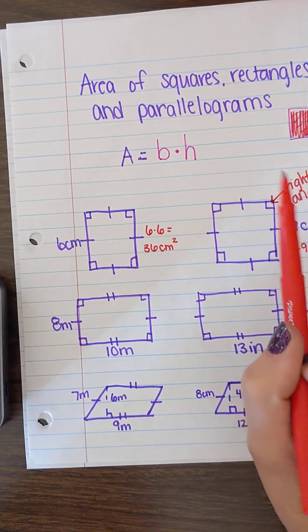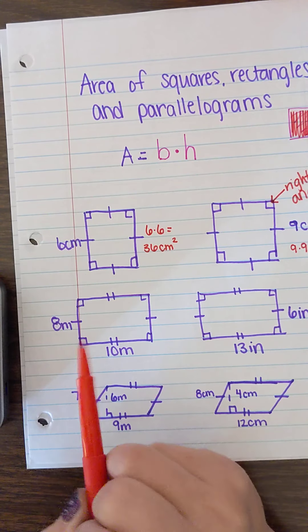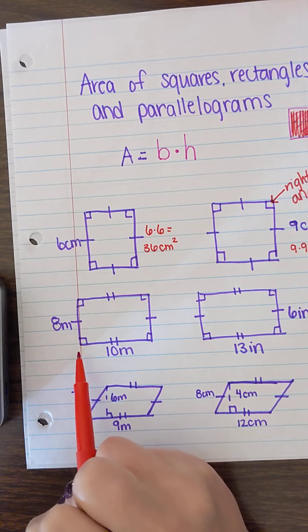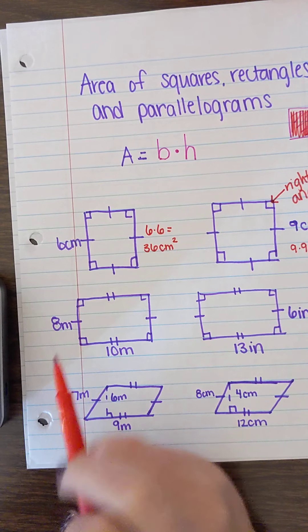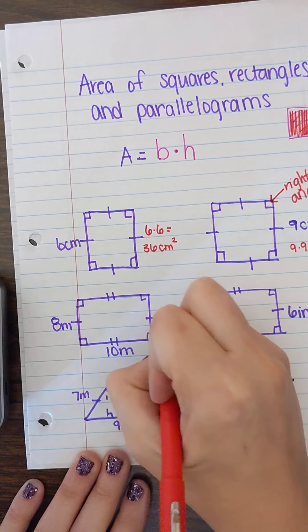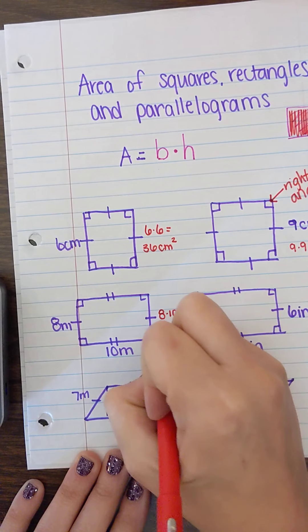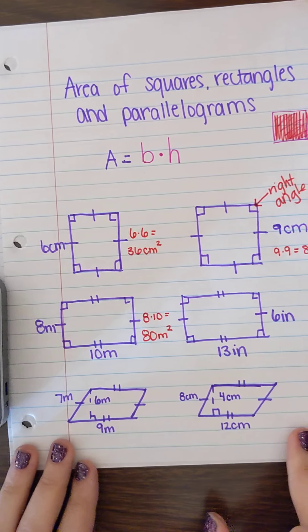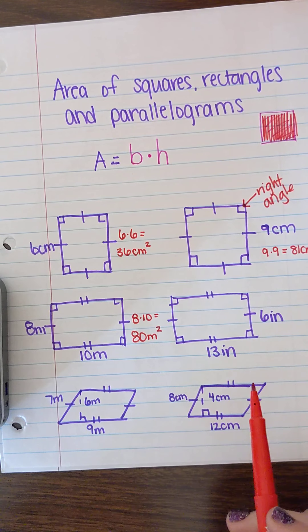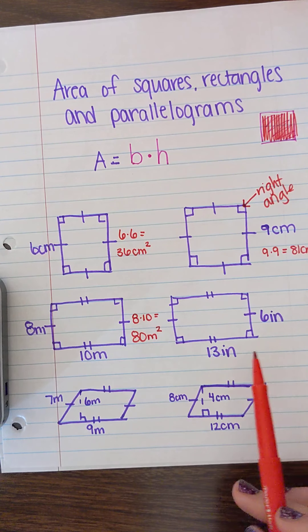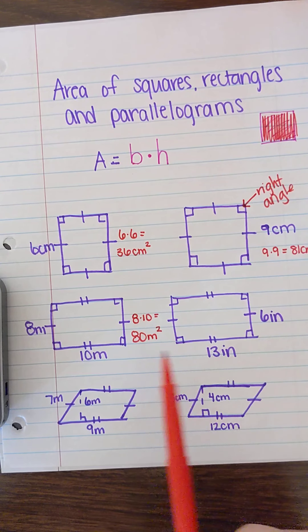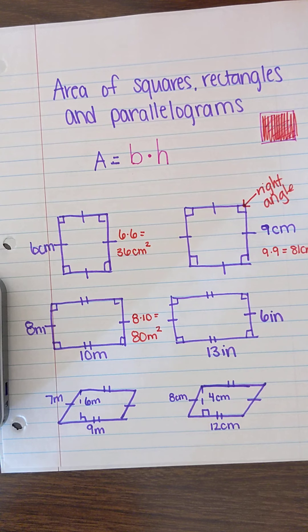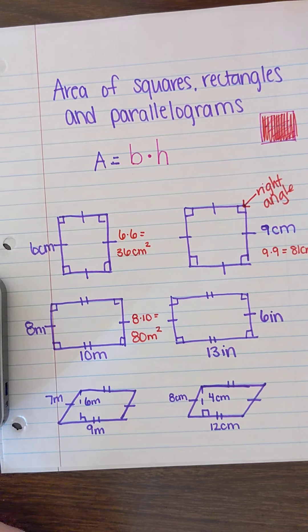Our right angle is going to tell us what the base is and what the height is — they connect. Here is a right angle connecting my base to my height, so I'm going to multiply 8 by 10 to get 80 meters squared. Squares and rectangles should be a review for you. I want you guys to try this one — find the area, which is base times height. I'll give you a little time to find the area of this rectangle.